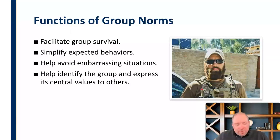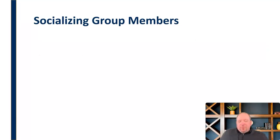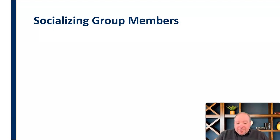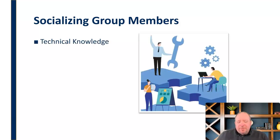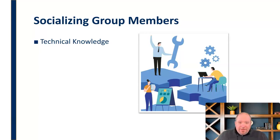So group norms facilitate a lot of different things within a group. There are lots of different functions, but these are some of the basic functions of group norms, how they're helpful, and the benefits they can offer. One important thing that happens within groups that we have to think about with norms is we have to socialize people when they come in. When you get a new group member, they've got to be acclimated and socialized into that group — taught what that group is, what we're doing, and how to do those things.